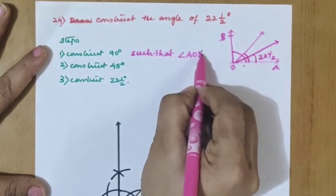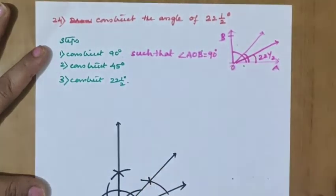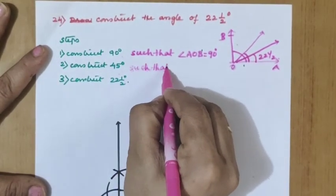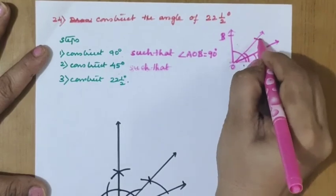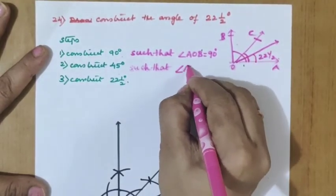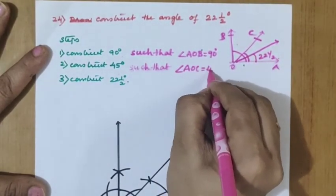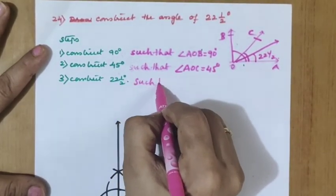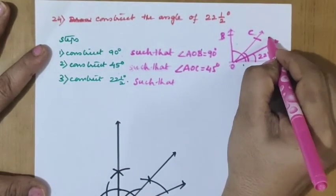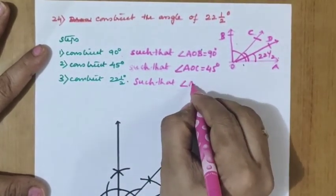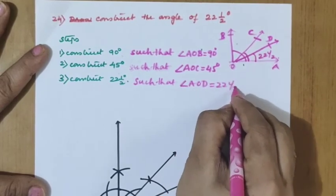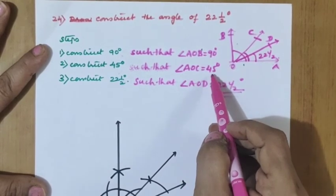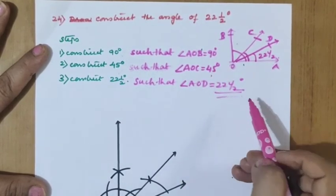In the steps: construct angle AOB equal to 90°. Next, construct angle AOC equal to 45° by bisecting AOB. Then construct angle AOD equal to 22.5° by bisecting AOC. So 90 divided by 2 gives 45, and 45 bisected again gives 22 and a half.